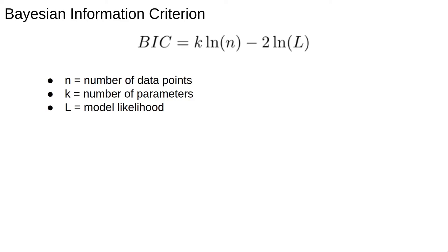Hopefully, n and k make sense to you now, but the likelihood might require some more explanation. Formally, the likelihood is the probability of the data given the model, and the values of fit parameters theta.